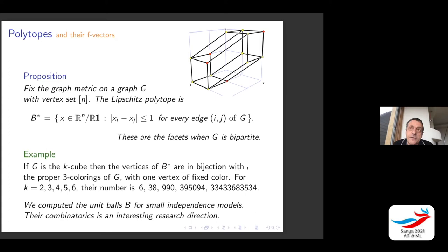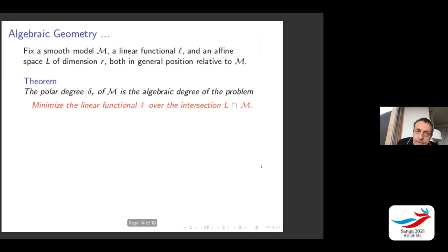We computed these unit balls for small independence models and their combinatorics — the blue combinatorics — which is an interesting research direction in its own right. The study of the unit balls of the Wasserstein metrics is an interesting topic of combinatorics, helping us understand the combinatorial complexity and estimate asymptotics. But this is a meeting on algebraic geometry and machine learning, so let me turn to the purple algebraic geometry.